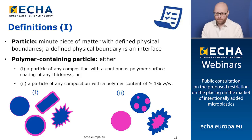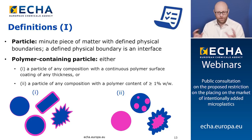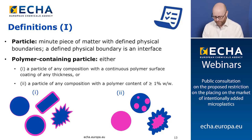Moving to further definitions: a particle, taken from the EU nanomaterials definition, is a minute piece of matter with a defined physical boundary — an interface. A new concept in our definition is the 'polymer-containing particle.' This means either a particle of any composition that has a continuous polymer surface coating of any thickness — with various non-polymer particles with polymer coatings of various thicknesses and morphologies being covered.